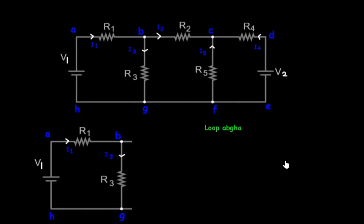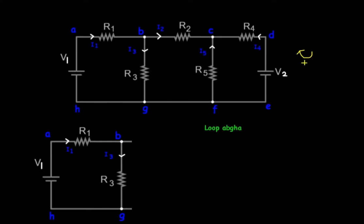I have this example here on the screen. We are going to generate loops from this circuit. The first loop I will generate will be loop ABGHA, represented by the circuit shown here. Before we continue — anytime we consider the direction of the current to be in the clockwise direction, we consider the current to be positive. When the direction of the current is moving in the anticlockwise direction, we consider it to be a negative current. Kirchhoff's voltage law states that the sum of the voltage drops in the loop should equal the total voltage in the loop.